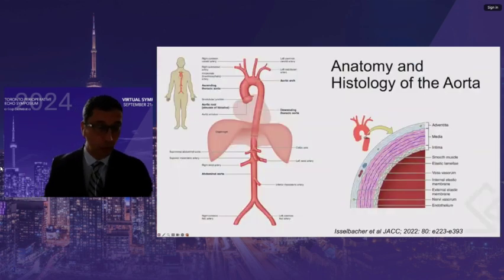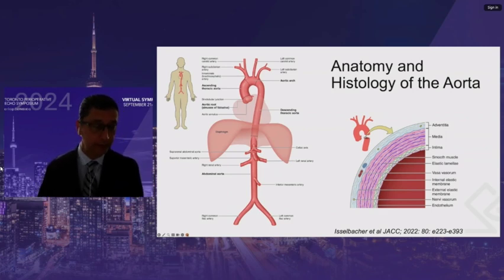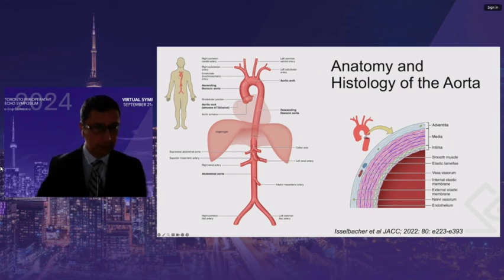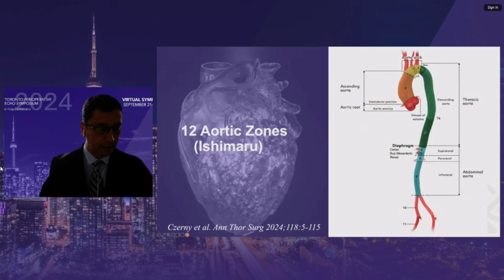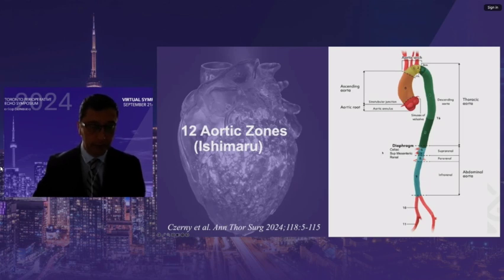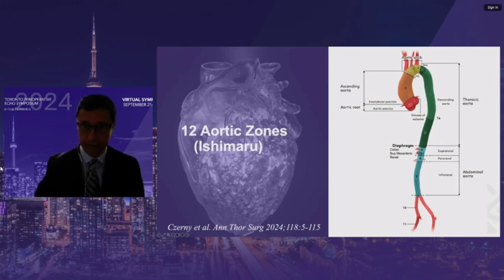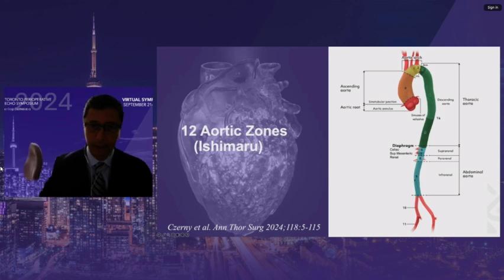The aorta is considered an organ which originates in the aortic root and finishes in the iliac arteries. The main branches start with the coronary arteries, the neck vessels, and in the infradiaphragmatic area, important visceral branches, ending in the iliac arteries. Current guidelines recommend using the Ishimaru landing zones for endovascular repair to describe the aorta, with important landmarks including the left carotid artery, P6, the diaphragm, and all the major branches of the abdominal aorta.